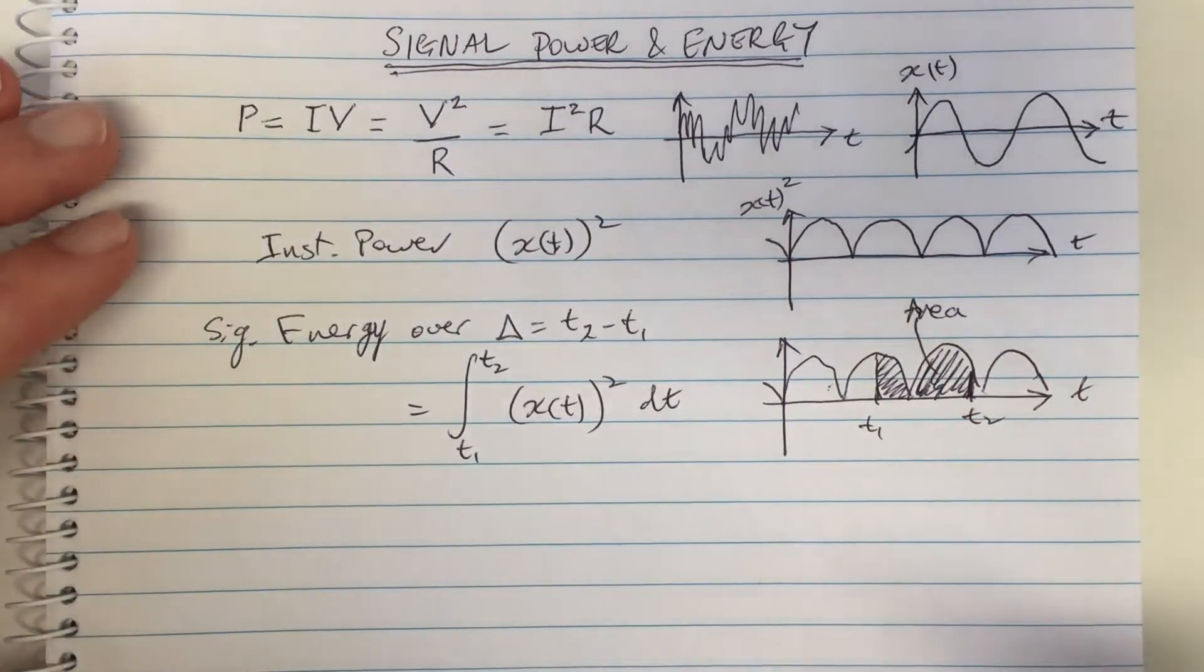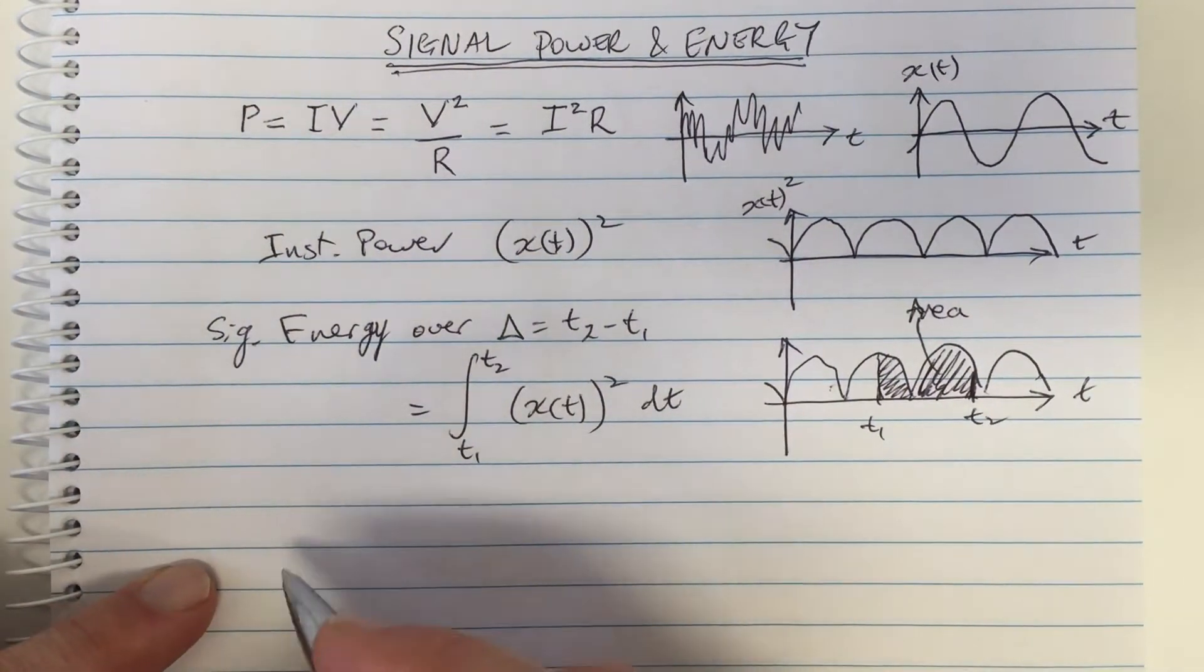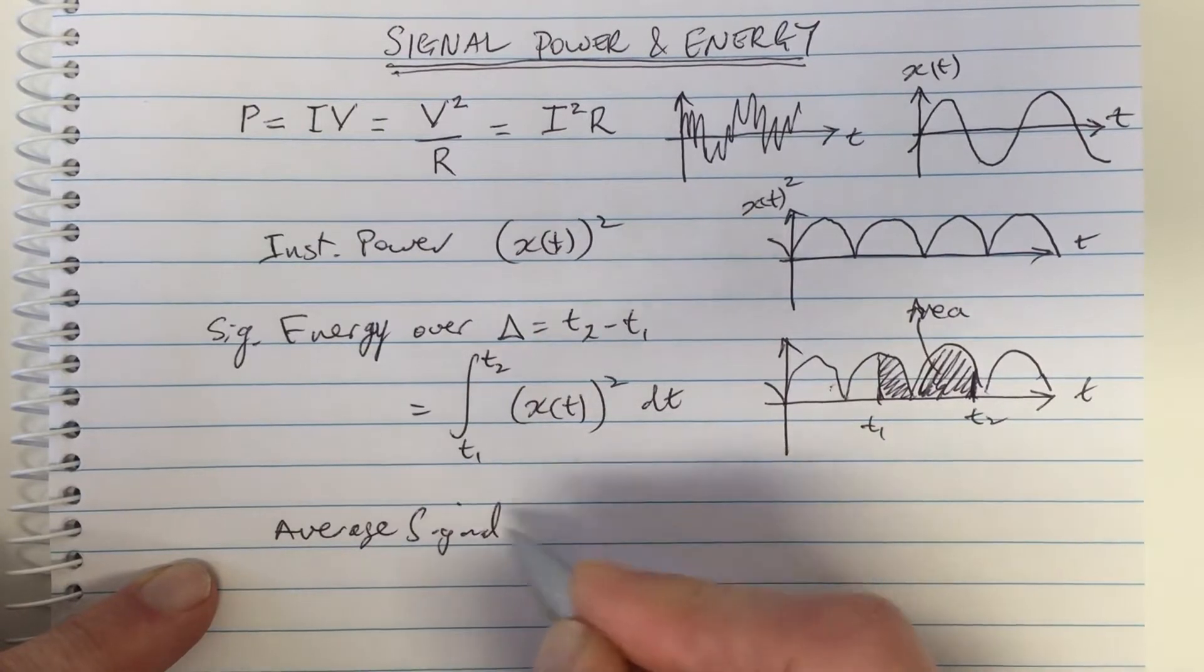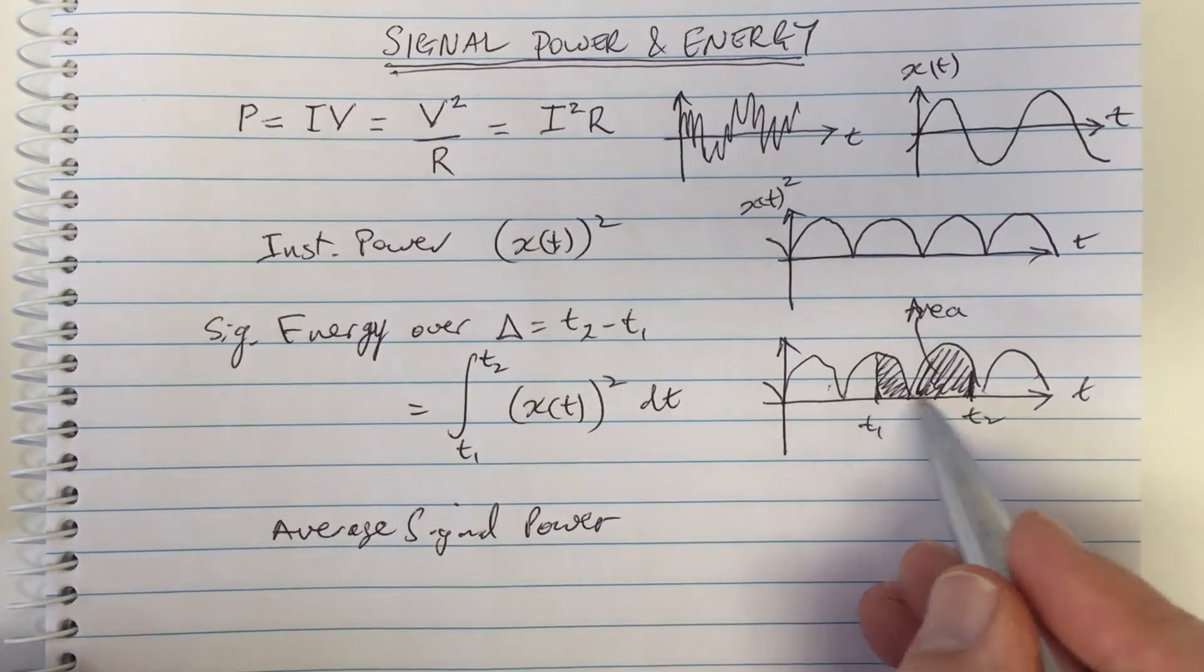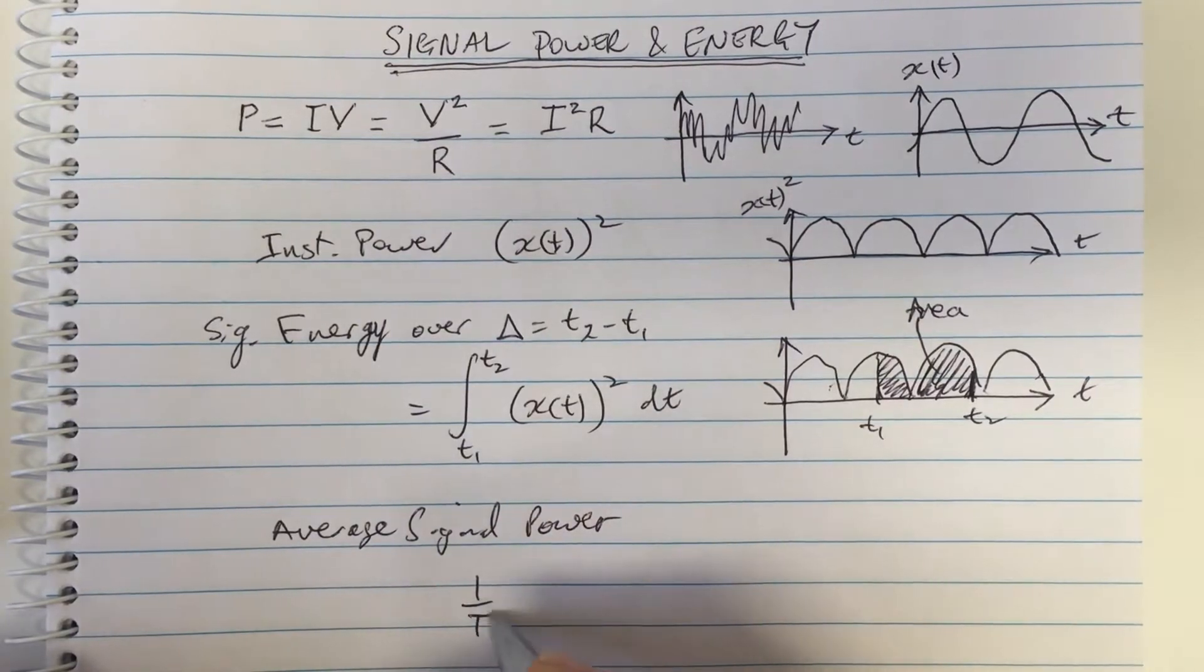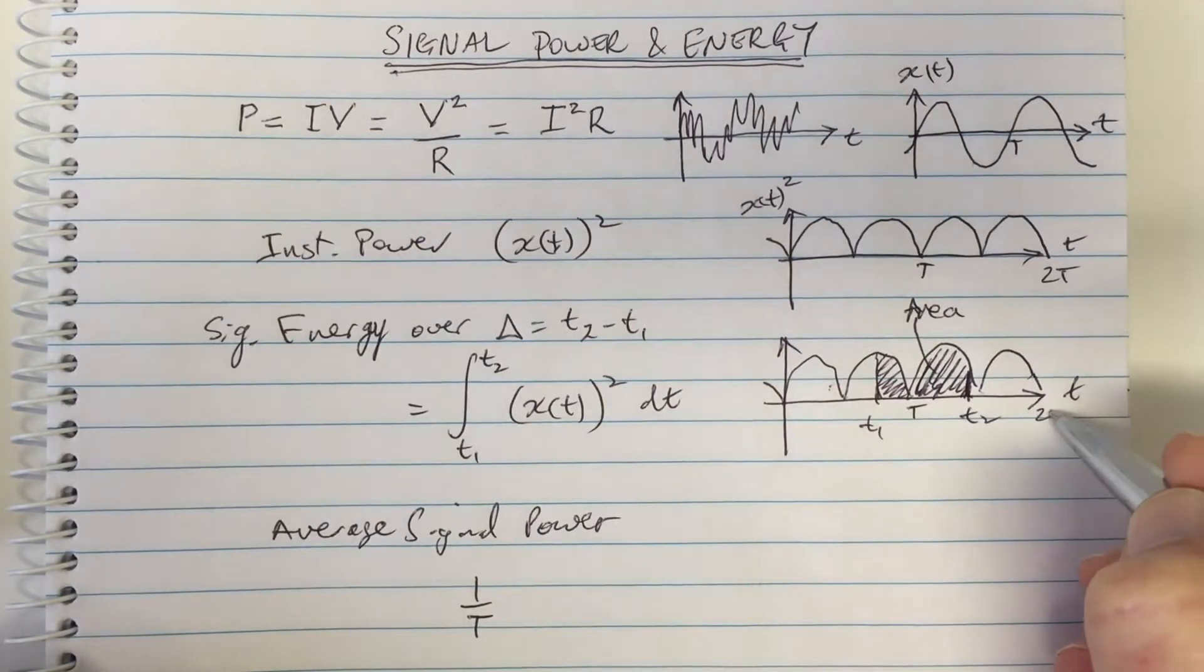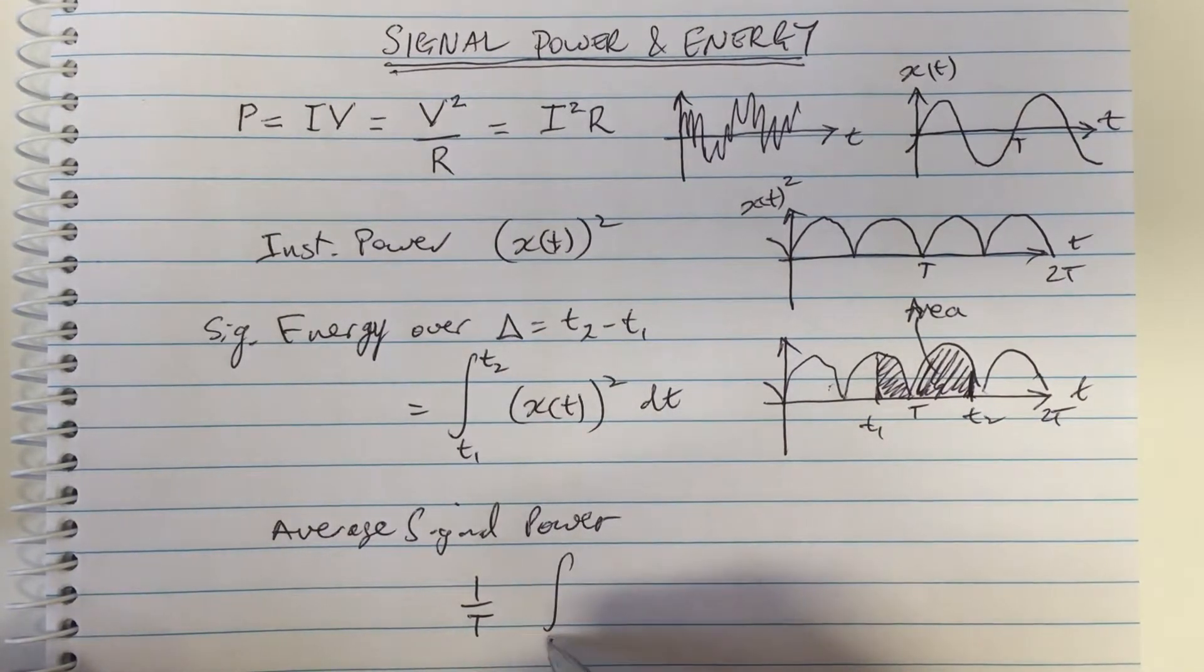So because we can't sort of conceive that, it goes for infinity, we define another term which we call the average signal power. And the average signal power is the average of the power over a period. Okay, so if a period is capital T, if this was capital T here, capital T, this period capital T, this is 2T, 2 capital T, then the average signal power would be you add up the area over a period.